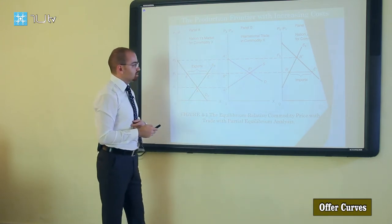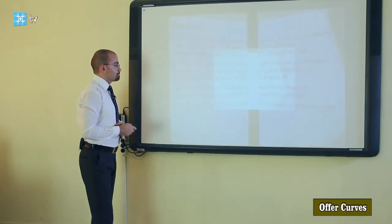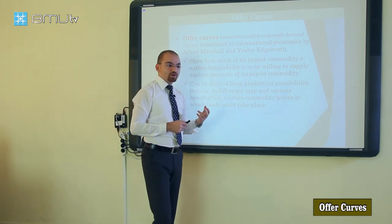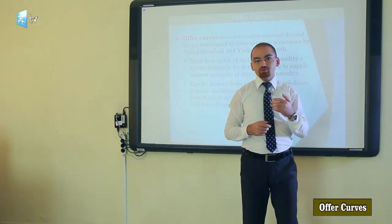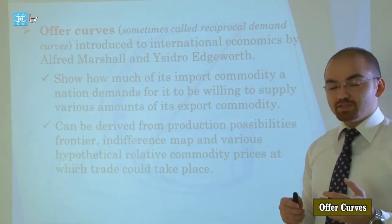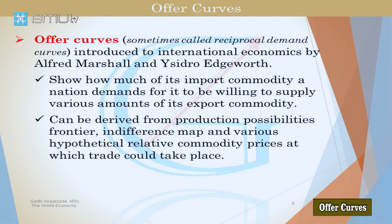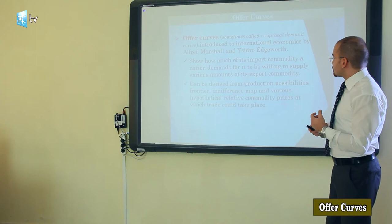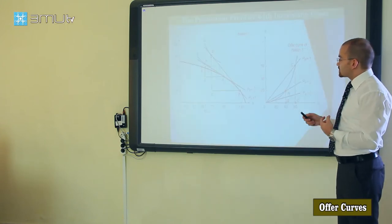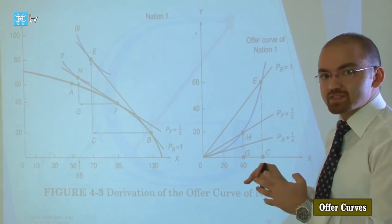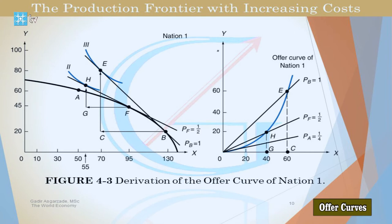The second target is mainly about the offer curve. With simple words, the offer curve indicates the quantity of export and quantity of import at each relative price. To explain the offer curve, we mainly need two curves: first, the production possibility frontier. This is the offer curve for nation 1 — the same concept applies for nation 2. We start from the left panel because the right panel is our result — the offer curve itself.